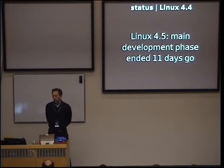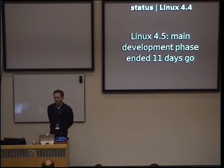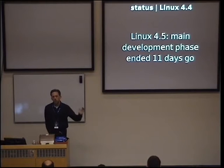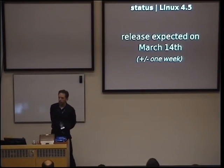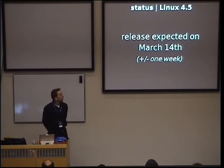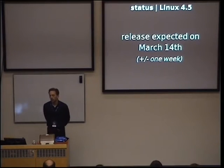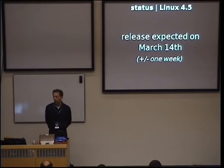The development of Linux 4.5 catch-up. The main development phase and the merge window ended 11 days ago, so it's already possible to see which features the next kernel version brings. You can quite predict when this kernel will come out — it's likely March 14th when Linux 4.5 will come out.